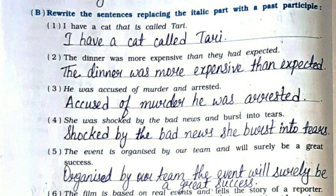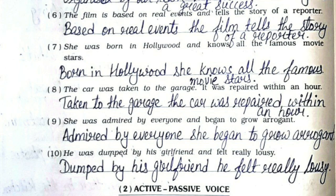Question Three B: Rewrite the sentences replacing the italic part with the past participle. Answers: I have a cat called Tari. The dinner was more expensive than expected. Accused of murder, he was arrested. Shocked by the bad news, she burst into tears. Organized by our team, the event will surely be a great success. Based on real events, the film tells the story of a reporter. Born in Hollywood, she knows all the famous movie stars. Taken to the garage, the car was repaired within an hour. Admired by everyone, she began to grow arrogant. Dumped by his girlfriend, he felt really lousy.